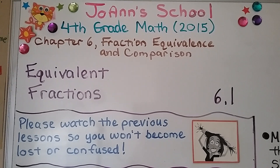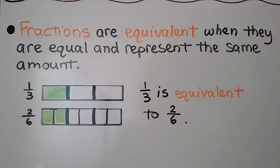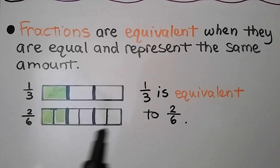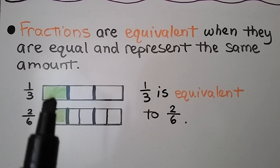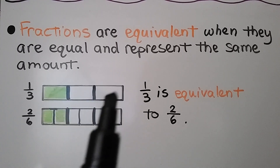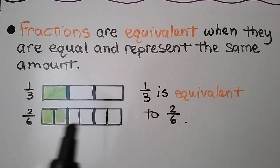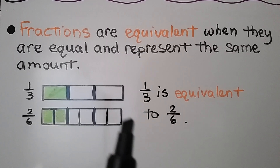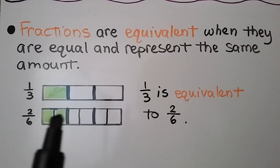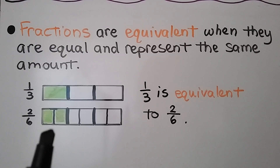Lesson 6.1: Equivalent Fractions. Fractions are equivalent when they are equal and represent the same amount. Here we have two rectangles that are the same size, but the top rectangle is split into three equal parts and one of the three parts is green. The bottom rectangle is split into six equal parts and two of the six parts are green. We can see that one-third is equivalent to two-sixths.